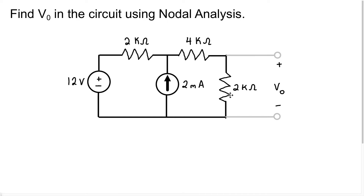Because we want to use the node voltage method to solve this, the first thing we should do is label all of our essential nodes. This is going to be node 1, and we have one more essential node at the bottom. We want to take one of these essential nodes as our ground node, so I'm going to take the node at the bottom to be our ground node. We want to find the voltage at each node, so I'll write this as V1.